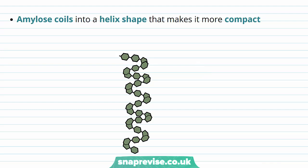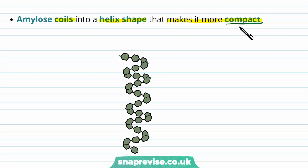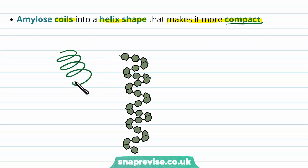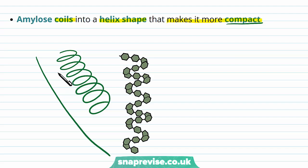When these bonds form in a long chain of alpha glucose, it doesn't just stay as a straight chain — it actually coils up into a helix shape, which makes it very compact. One of the important properties of polysaccharides is that they are compact, so they take up less room. The amylose coils into a helix rather than a very long straight chain, which would take up much more space.